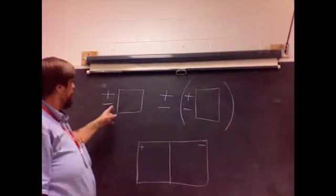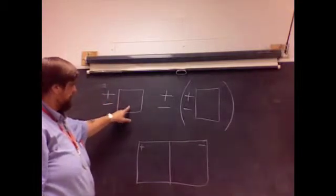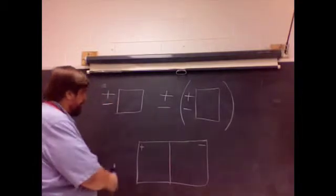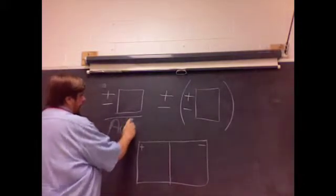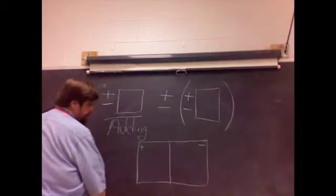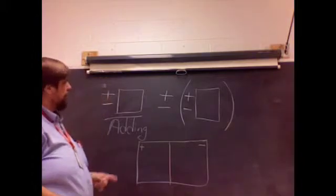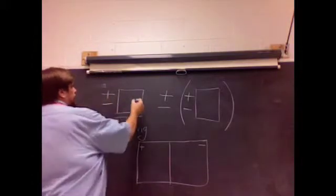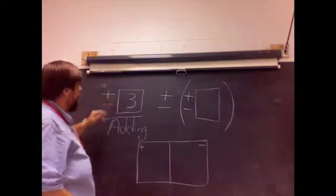Now here we have our sign and our first item. Well the thing that we know about the first item is it will always involve adding tiles to our board, to our algebra block board. So we look here, in this case let's say we have a three and let's say that's a positive three.